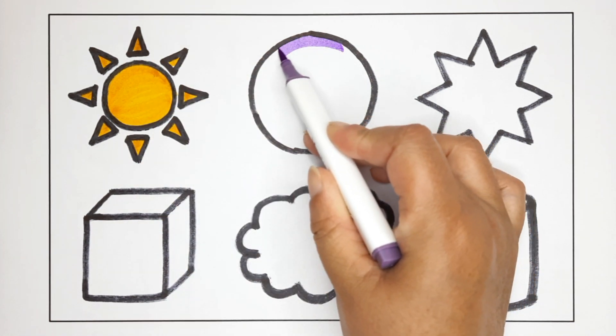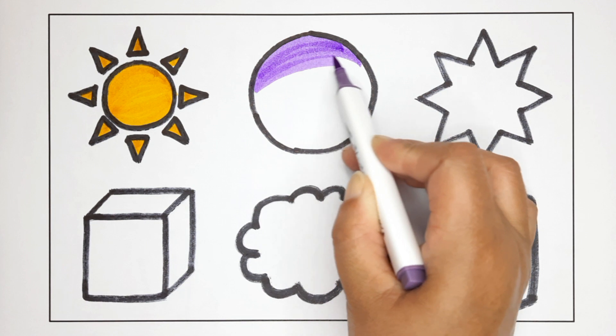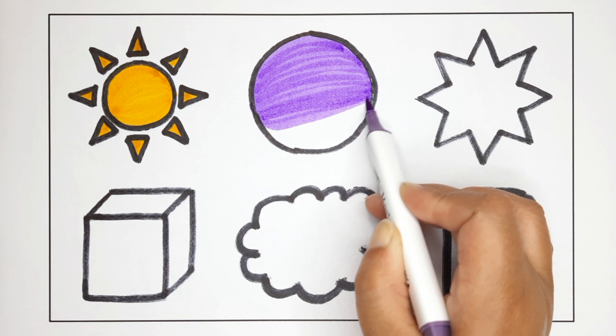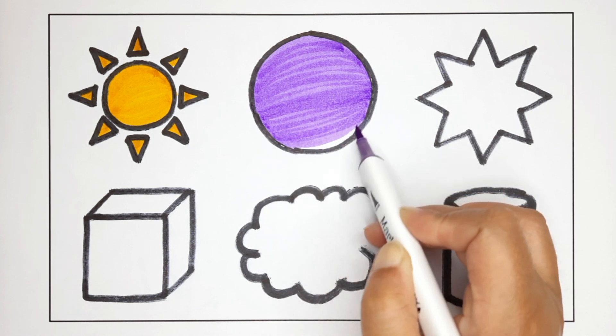Light purple color. Circle. This is circle. The circle is purple color.